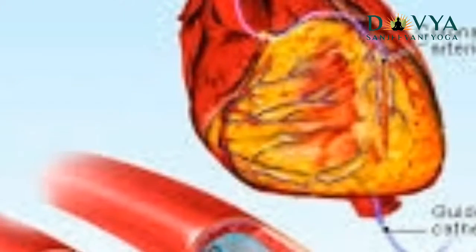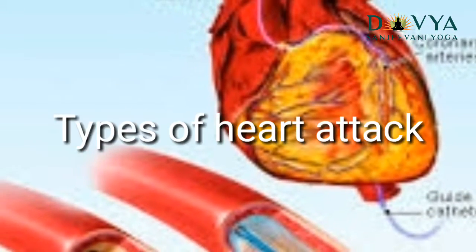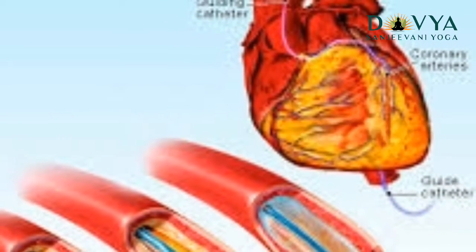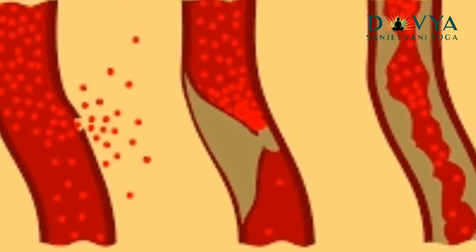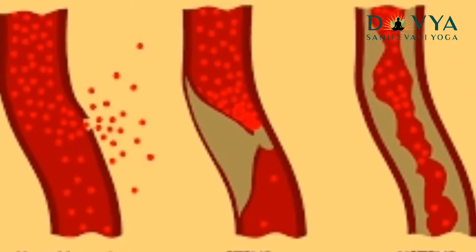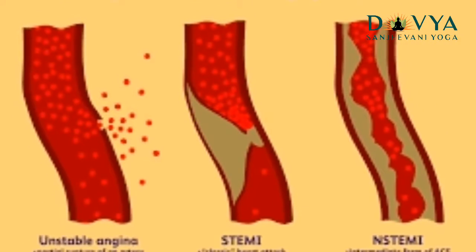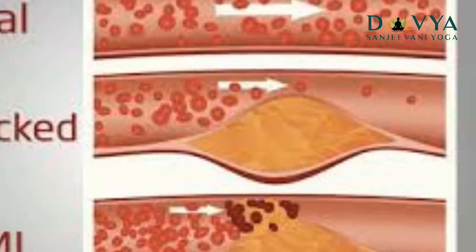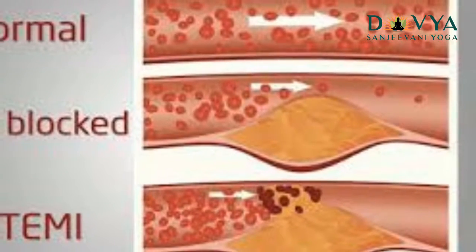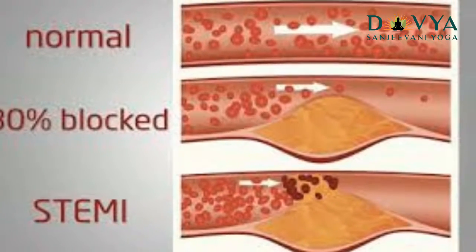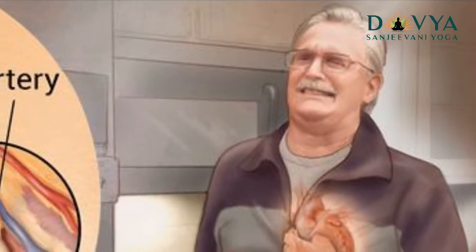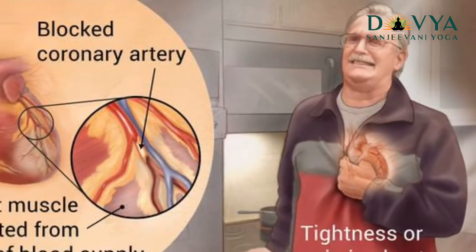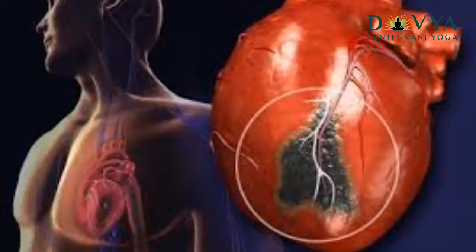Types of heart attack. Heart attacks can be divided into two types. ST elevation myocardial infarction (STEMI): This is the complete blockage of blood flow in a coronary artery supplying the heart with oxygen-rich blood. Because of the complete loss of blood flow, the full thickness of the heart muscle supplied by that artery may die.